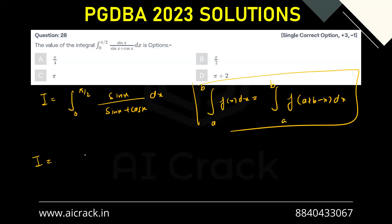So I can be written as with this property 0 to pi by 2 sin of a plus b, that is pi by 2 plus 0, that is pi by 2 minus x, plus cos of pi by 2 minus x dx. This is also I by this property.